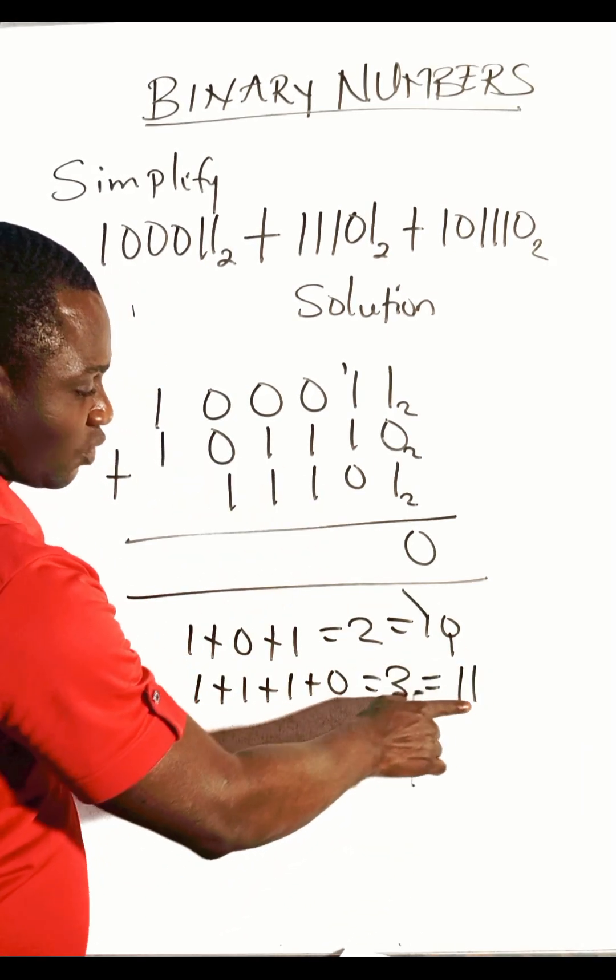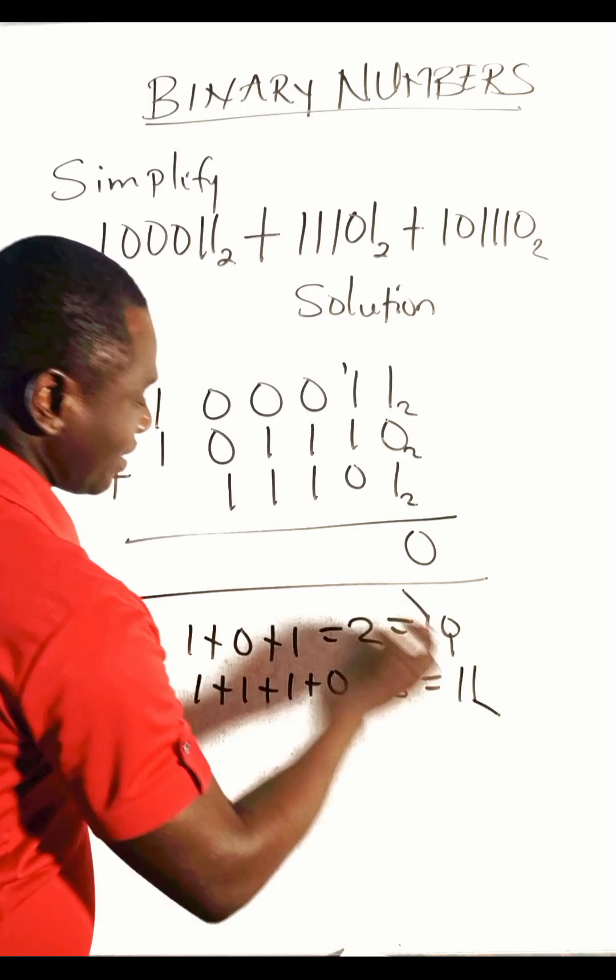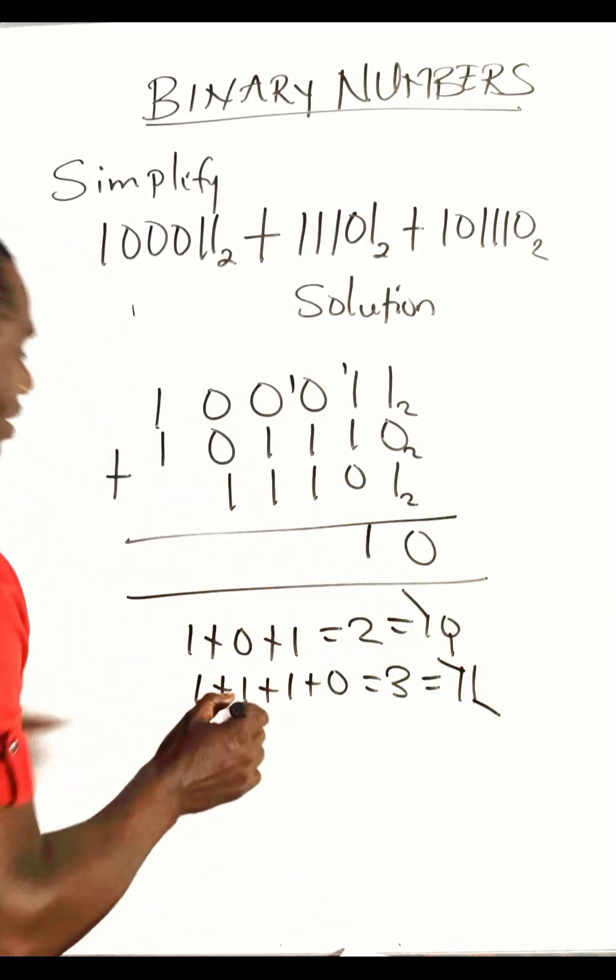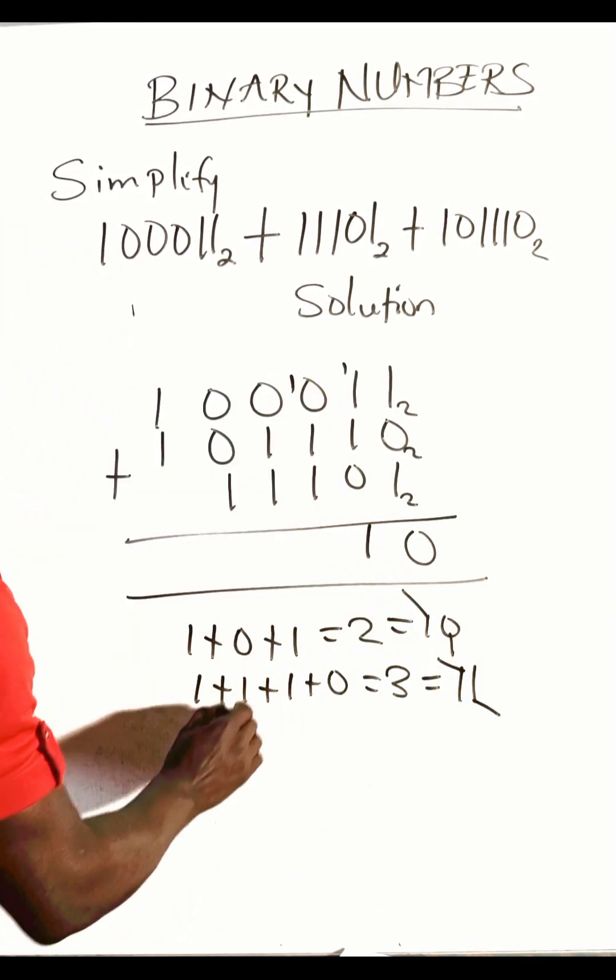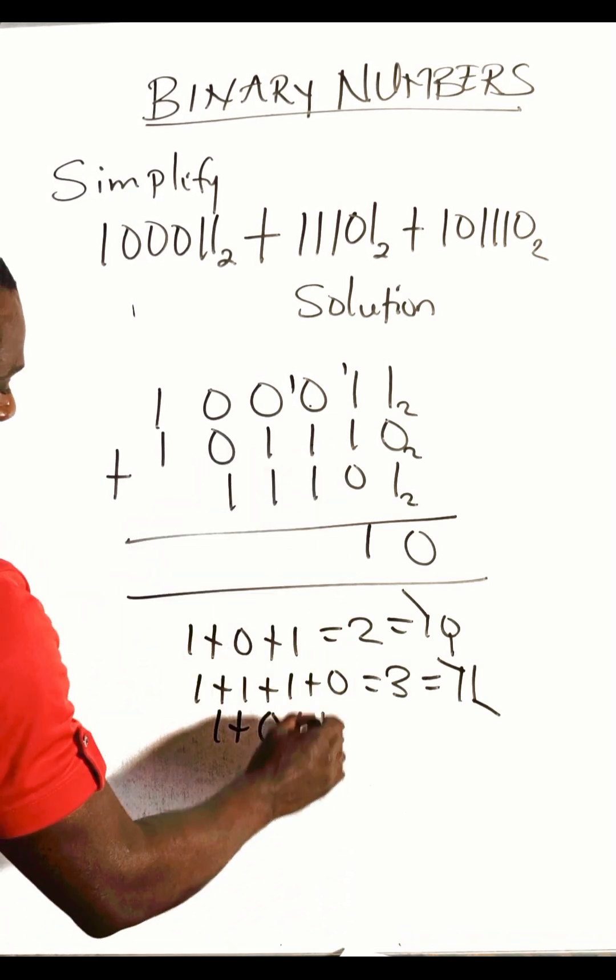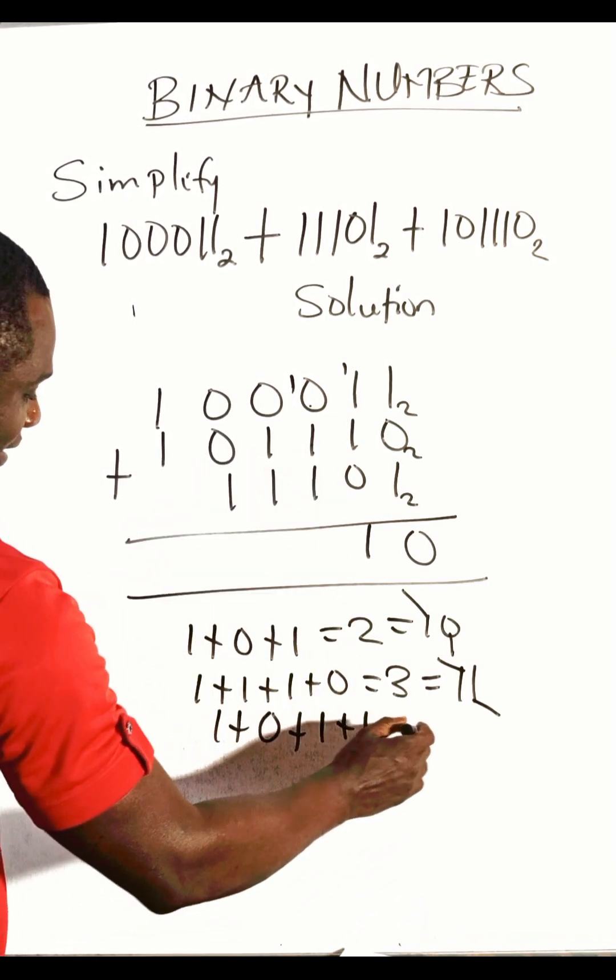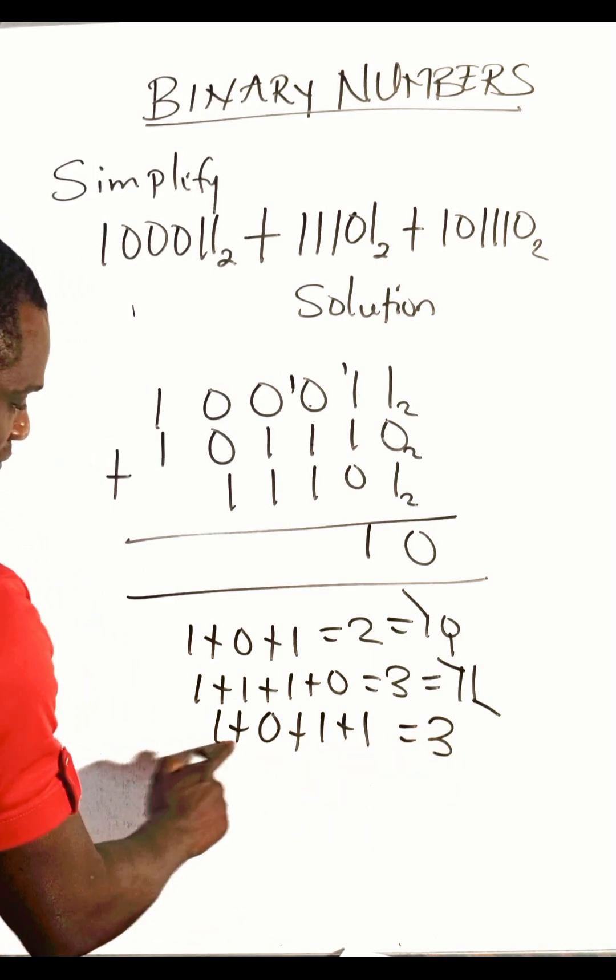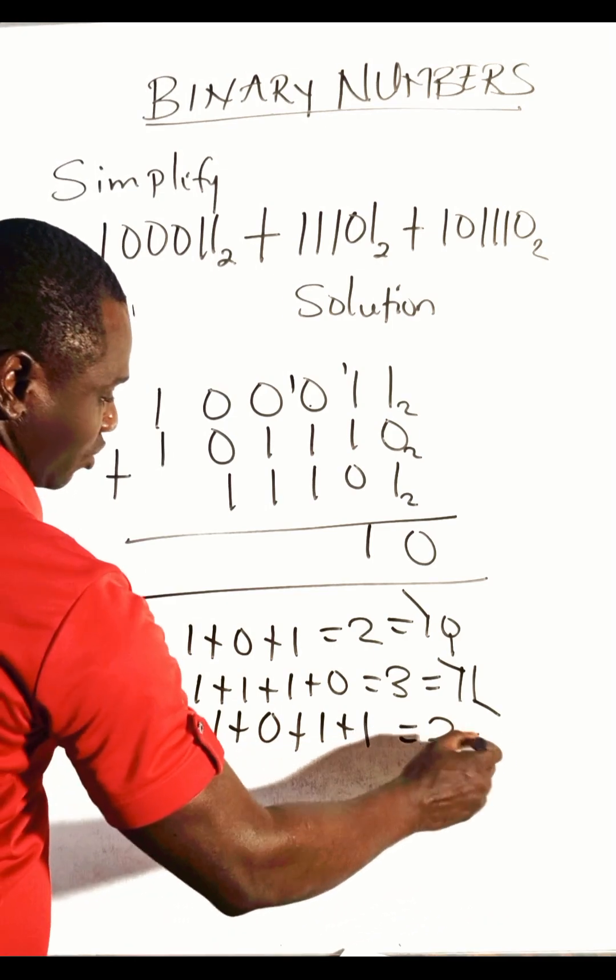Let's add again. One plus zero plus one plus one gives us three again. Three is also eleven, so write down this one.